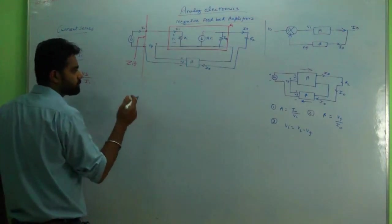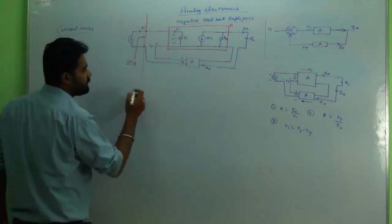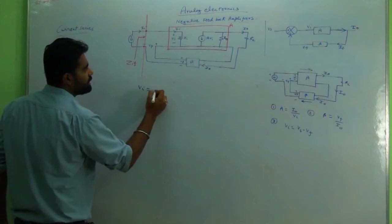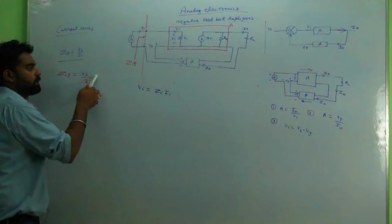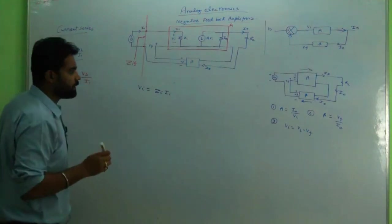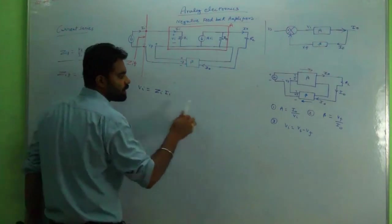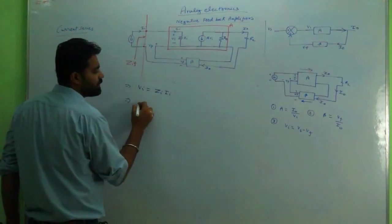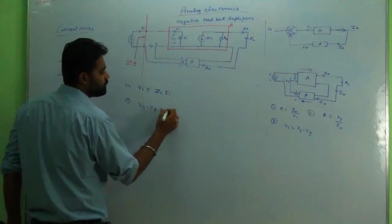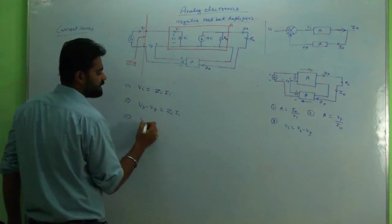So we'll start our derivation. vi equals zi into ii. We require the derivation in terms of vs and ii, so I'll keep ii intact and I'll replace vi. I'll replace vi by vs minus vf equals zi into ii.